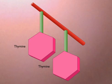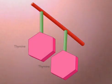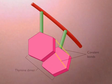When cells are exposed to sunlight, radiant energy can damage the DNA. For example, ultraviolet irradiation causes covalent bond formation between adjacent thymines on the same strand of DNA.